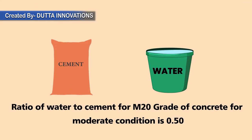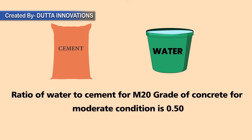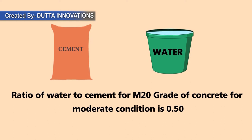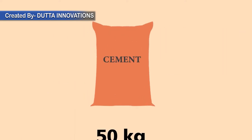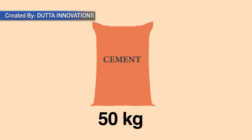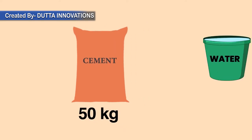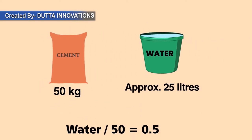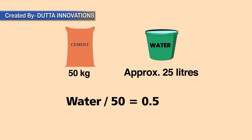As per IS-456, the ratio of water to cement for M20 grade of concrete for moderate condition is 0.50. One bag of cement weighs 50 kg. With a water-to-cement ratio of 0.5, 25 litres of water is required for 50 kg cement — 25 divided by 50 equals 0.5.